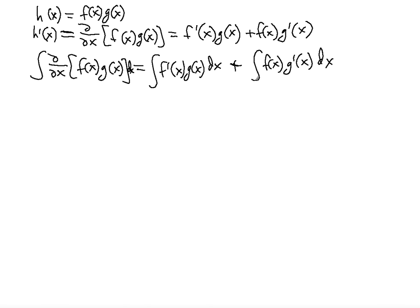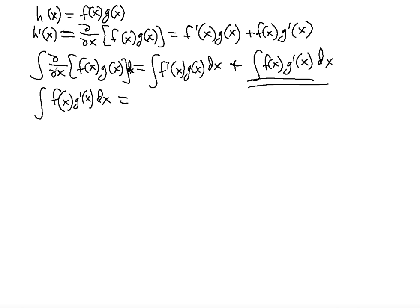Now what we're going to solve for is this piece right here. I'm going to write it on the left side: the integral of f(x)g'(x)dx equals — subtracting the other term from both sides. Notice that if you integrate the derivative you're basically undoing it, getting the product of the two clean functions, then subtracting the integral of f'(x)g(x)dx.